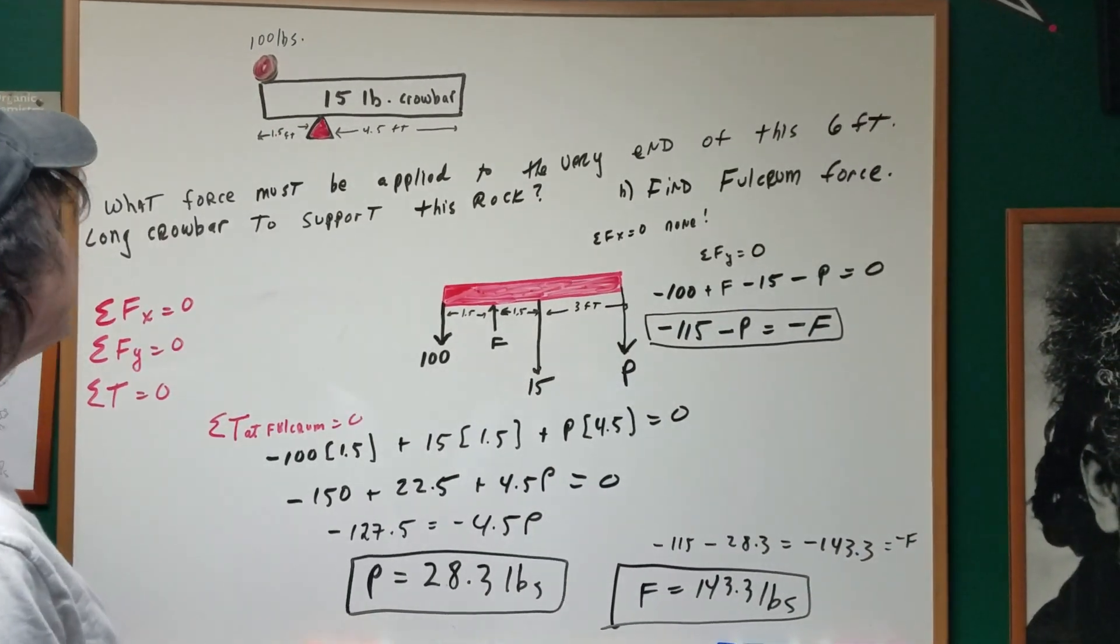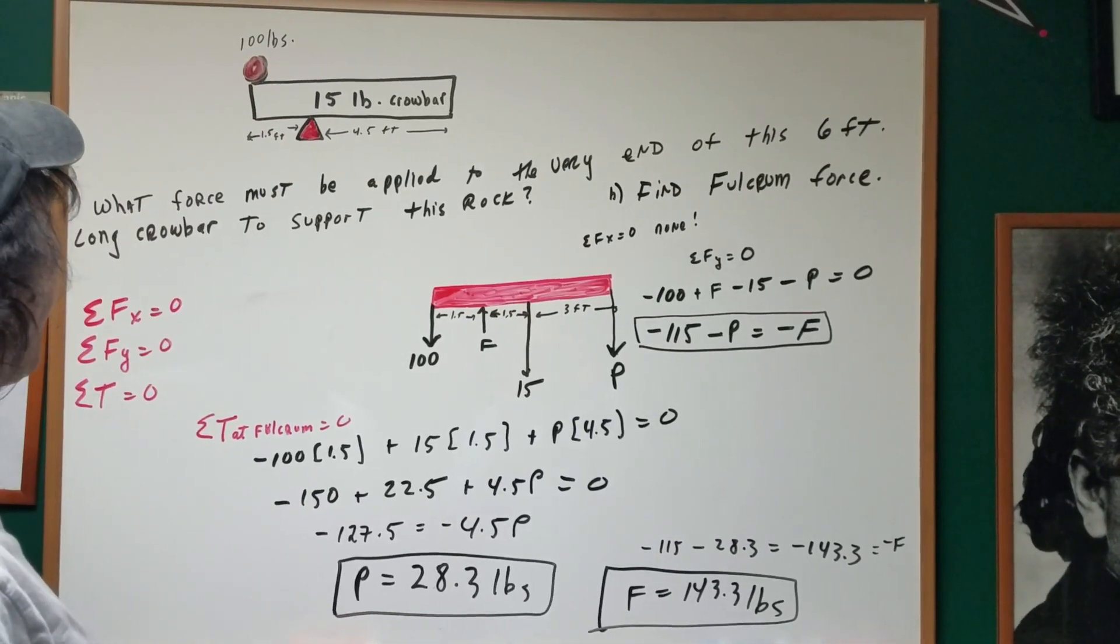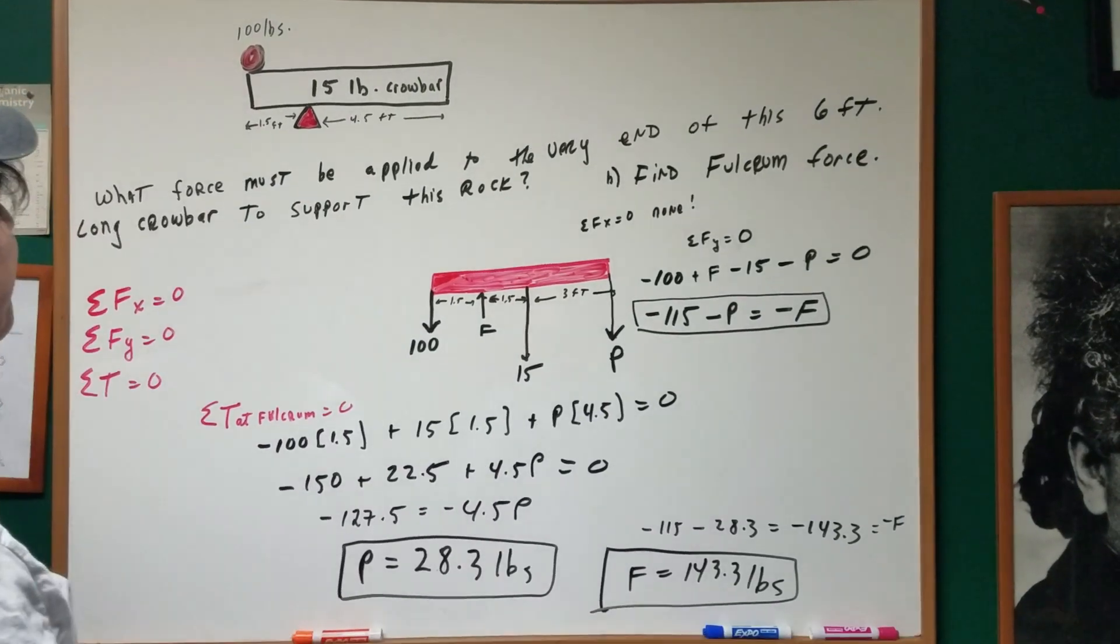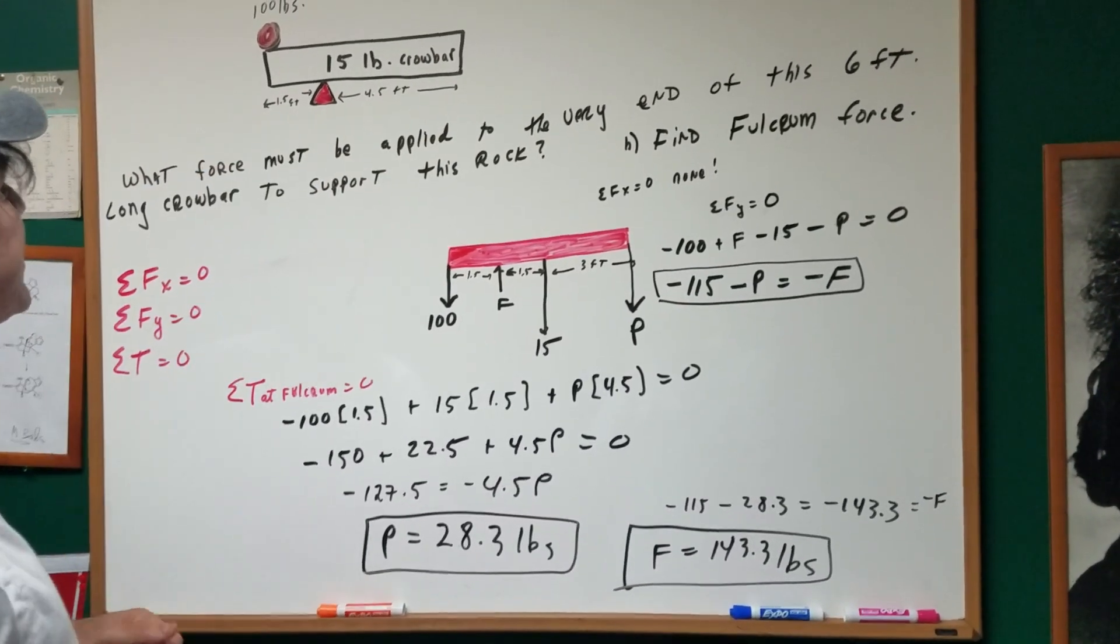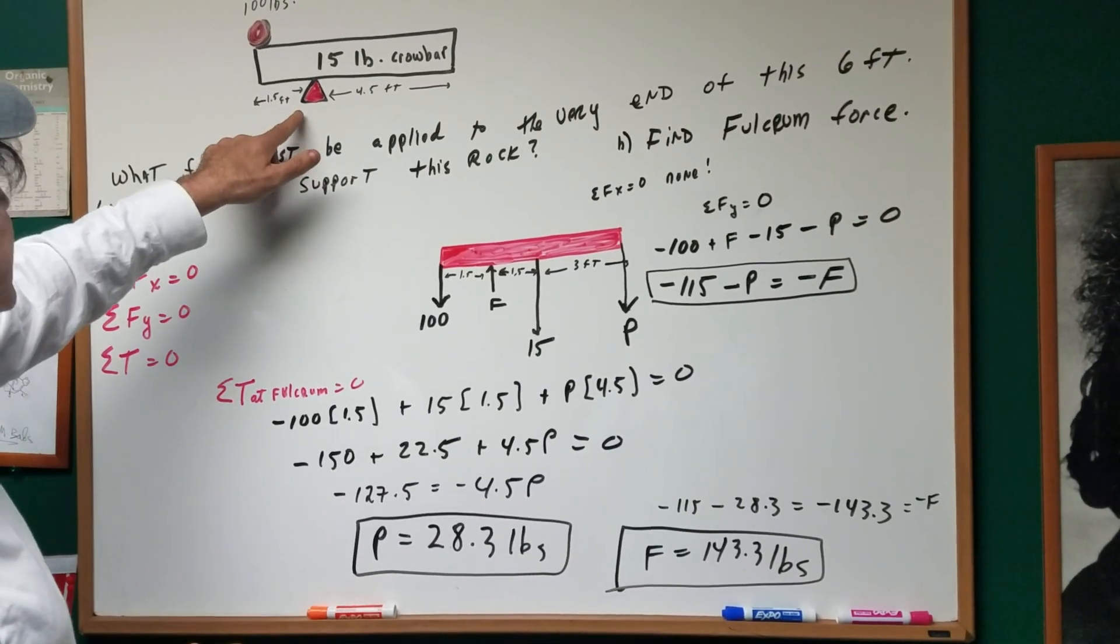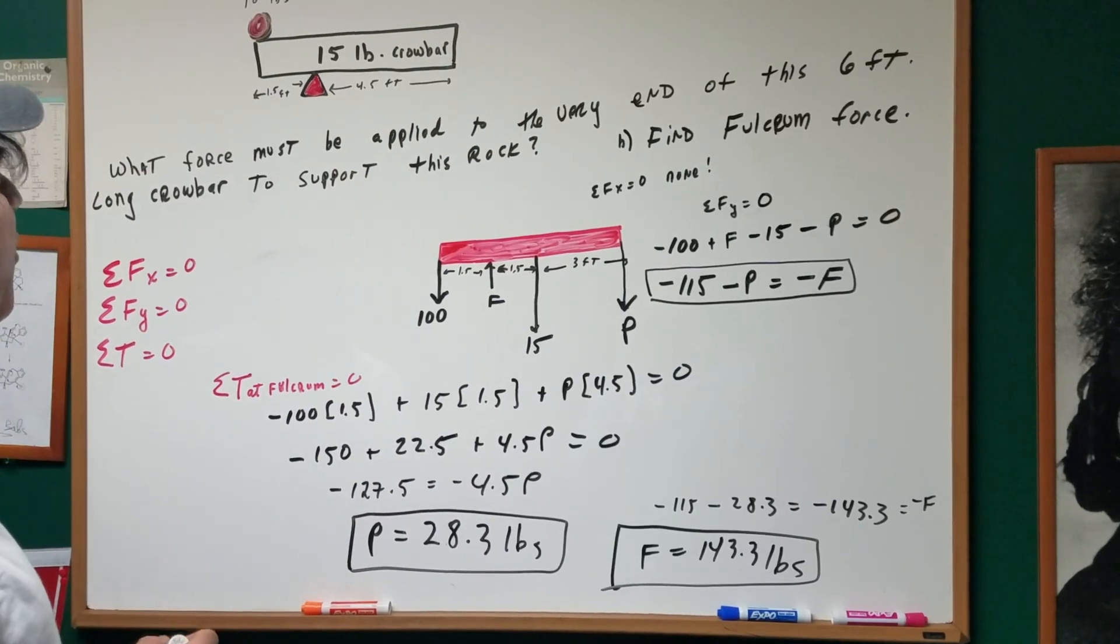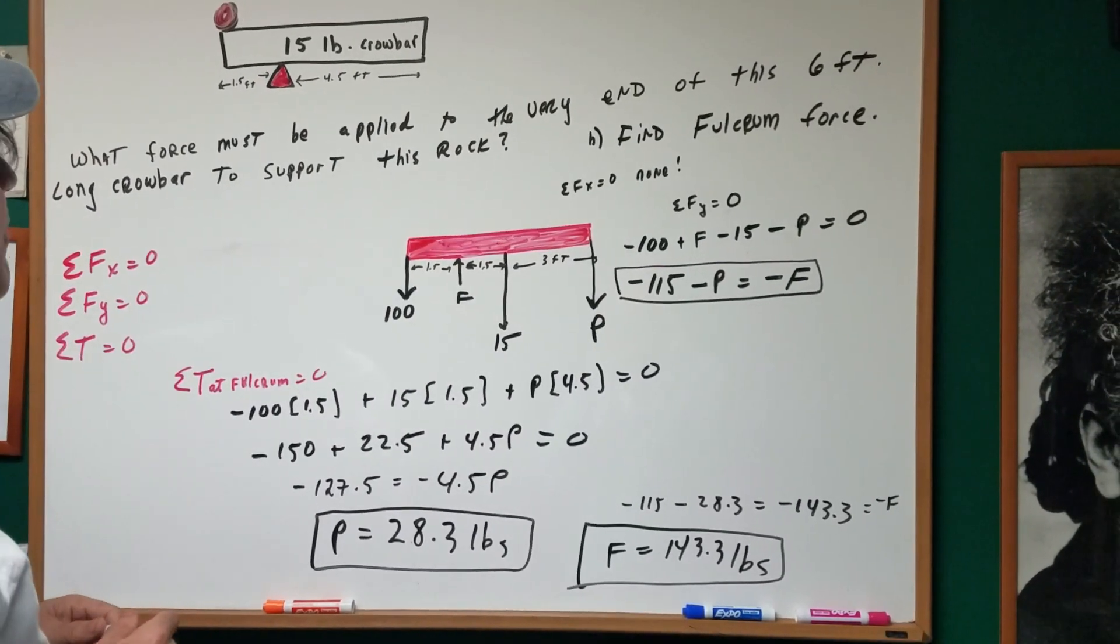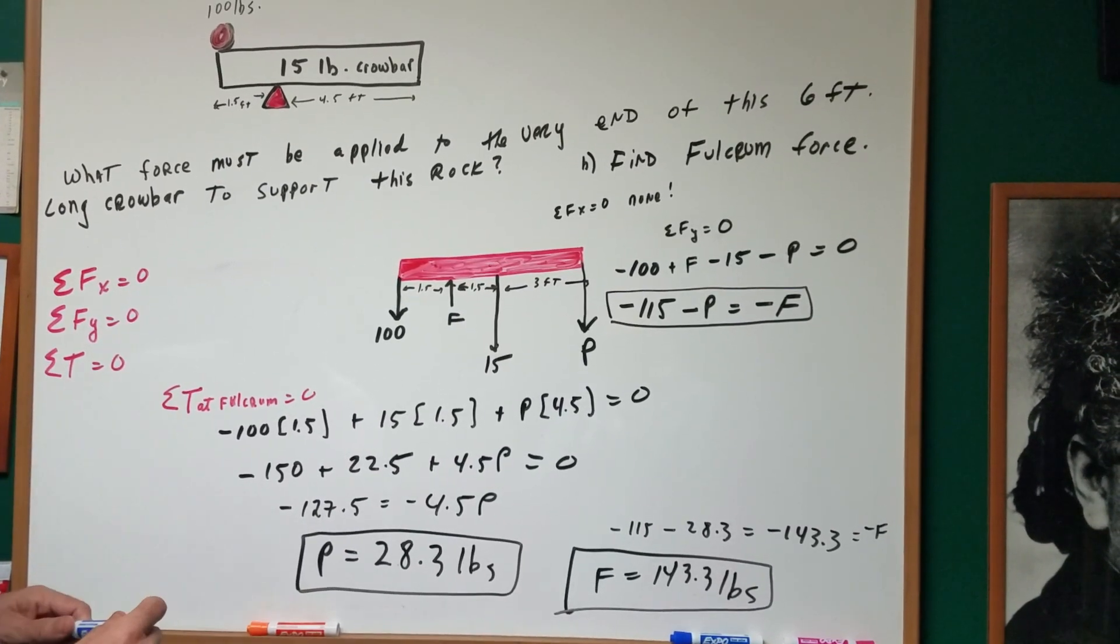Let's take a look at this crowbar. And we have a 100-pound rock sitting on the left end. You've got the crowbar, which weighs 15 pounds. Here's the fulcrum. The whole distance is 6 feet. Notice it's 1.5 feet to the left, and then 4.5 feet to the right. And I want to know what force must be applied to the very end of the 6-foot-long crowbar to support